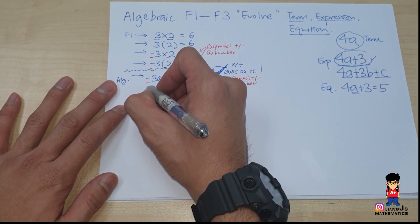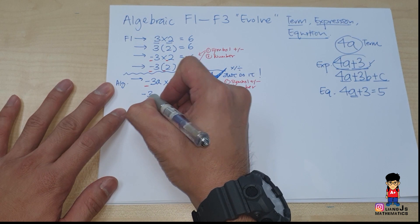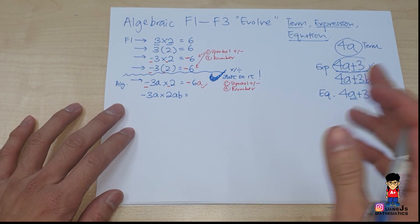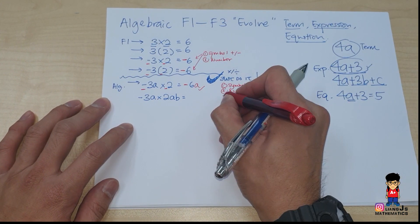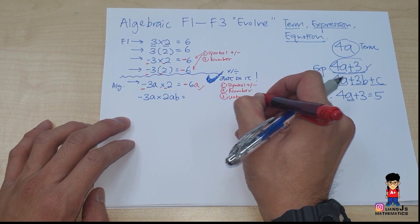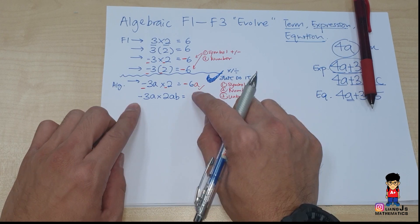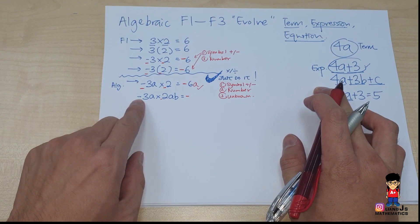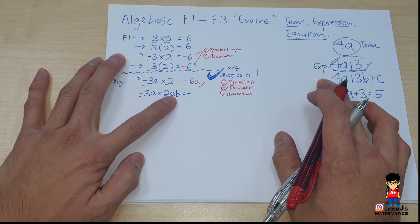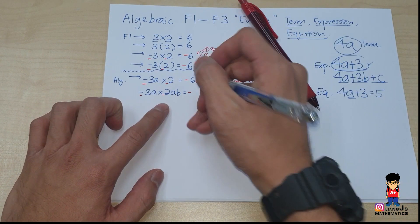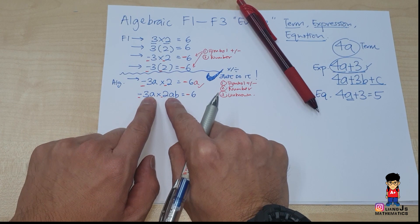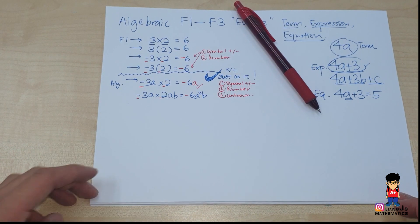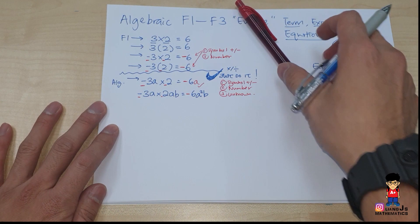Moving further: minus 3a times 2ab — same unknown, different unknown, don't care, just do it. Deal with the symbol first: minus and plus gives minus. Then 3 times 2 gives 6. Now for the unknowns: there's one 'a' and one 'a,' total two, so we label it a-squared. How many b's? One b. So it slowly becomes harder as we include more unknowns.